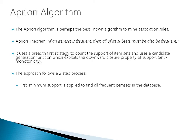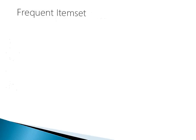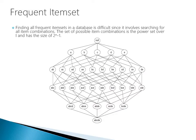This algorithm uses a breadth-first strategy to count the support of item sets and uses a candidate generation function that exploits the downward closure property of support, known as anti-monotonicity. The approach follows a two-step process: first, the minimum support is applied to find all frequent item sets in the database; second, these frequent item sets and the minimum confidence constraint are used to form the rules. Finding frequent item sets is difficult since it involves searching over all item combinations — the set of possible combinations has a size of 2 to the n minus 1.